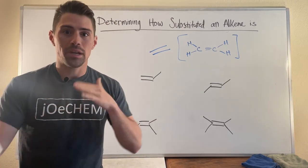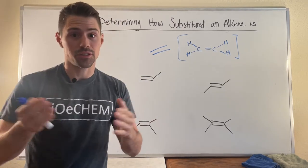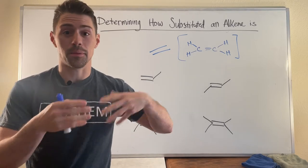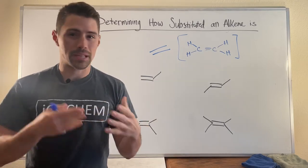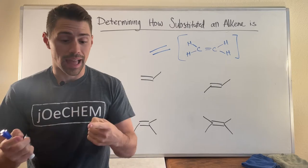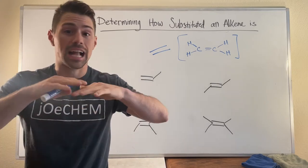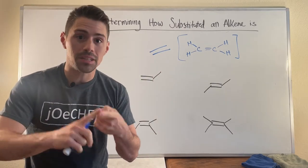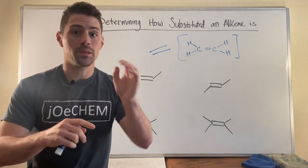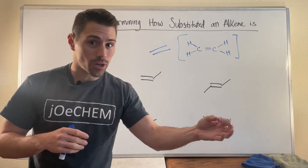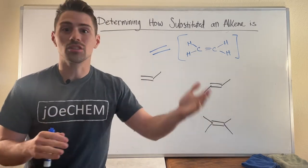In a previous video we talked about how we could answer the question of how substituted is a particular carbon, and we could apply terminology saying that maybe a carbon if it's not attached to any other carbons is a methyl carbon. We could call it a primary carbon if it's attached to one additional carbon, secondary, tertiary, quaternary, right?